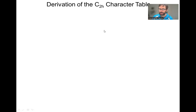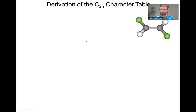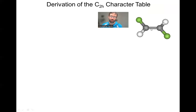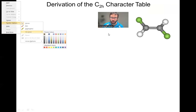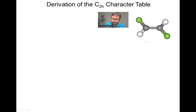In this video we are going to derive the C2H character table. A lot of times the best way to start out is to start with a molecule that has the symmetry you're trying to derive. So here's a molecule, this ethylene, that has different substitutions trans to one another. This has C2H symmetry. So what we need to do first is come up with all the operations in this C2H point group.